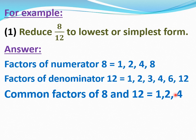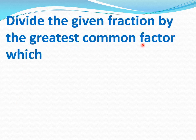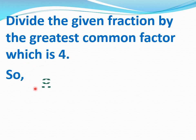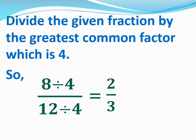The highest factor is 4, so we will divide 8 by 12 by 4. Write highest common factor equal 4. Divide the given fraction by the greatest common factor which is 4. So 8 divided by 4 and 12 divided by 4: 8 divide 4 equal 2 and 12 divide 4 equal 3. So write 2 by 3. Hence 8 by 12 equal 2 by 3. This 2 by 3 is the simplest form of 8 by 12.